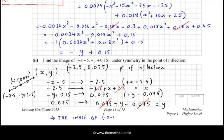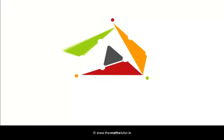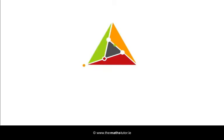The image of (-x-5, -y+0.15) is (x, y). That was quite a long and involved question. So there you have it. That's the end of this question. I hope it was of some help to you. Bye for now.